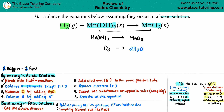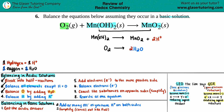Step four: balance the hydrogens by adding H⁺. If you need one hydrogen, add one H⁺; two hydrogens, add two H⁺'s; three hydrogens, add three H⁺'s. In the first equation I have two hydrogens on the right and none on the left, so I add two H⁺'s to the left. In the second equation I have a total of four hydrogens on the right because two H₂O's equals four H's, so I add four H⁺'s on the left side.